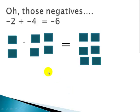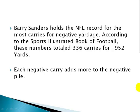Here it is in math. Negative 2 plus negative 4 has the same value as negative 6. Barry Sanders holds the NFL record for the most carries for negative yardage. According to the Sports Illustrated Book of Football, these numbers totaled 336 carries for negative 952 yards. Each negative carry adds more to the negative pile.